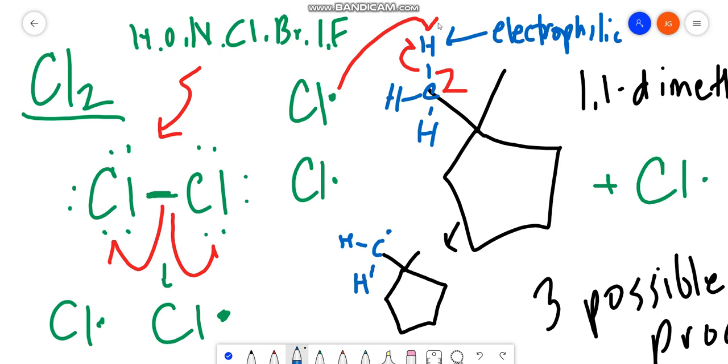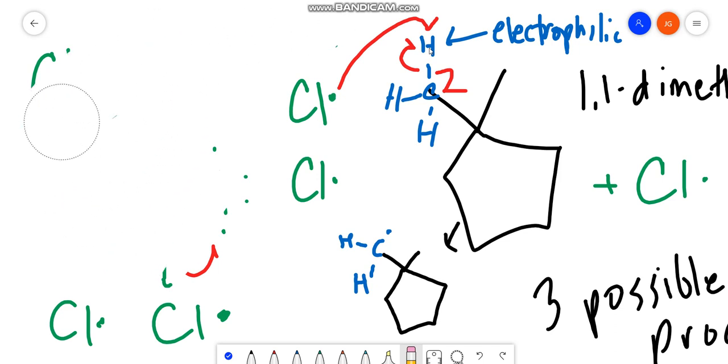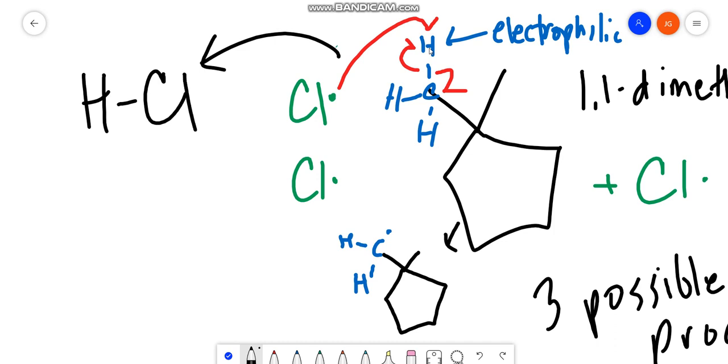Okay, and what's going to happen to this hydrogen up here? Well, let me erase this over here. This is no longer necessary. It's going to form hydrochloric acid, HCl. It's going to form a hydrogen-chlorine bond, using these two electrons.